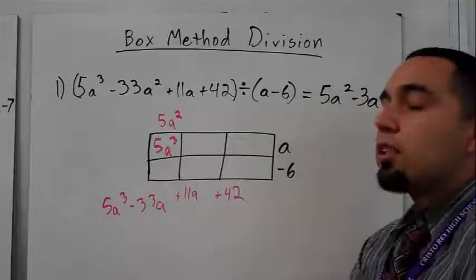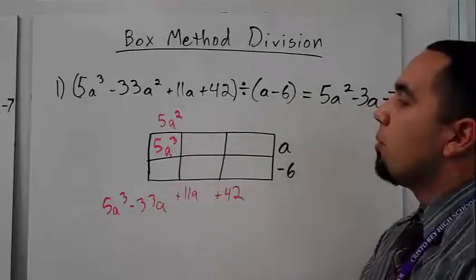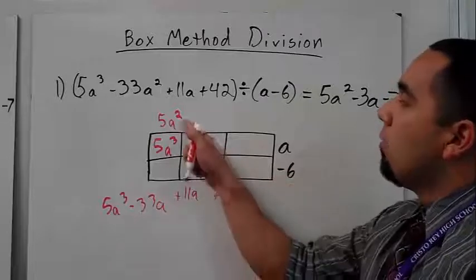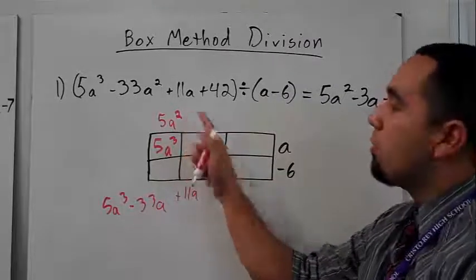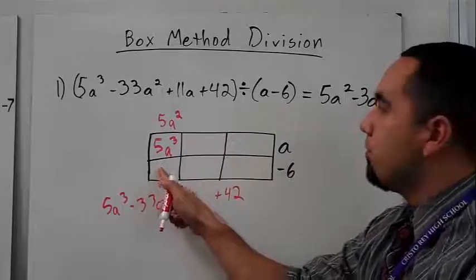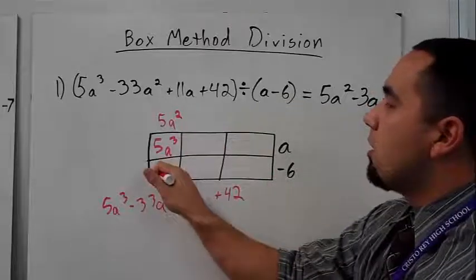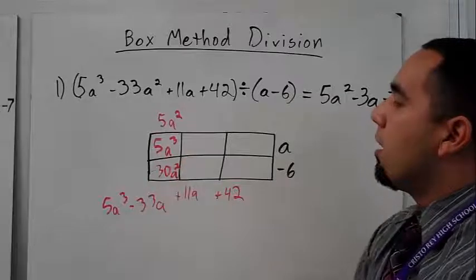Now, again, I can just continue to use logic to figure out what all of these boxes are, because now I know what this box should be, because I have the number up here. So 5a squared times negative 6 should fill in this box, right? So 5 times negative 6, that's negative 30a squared.